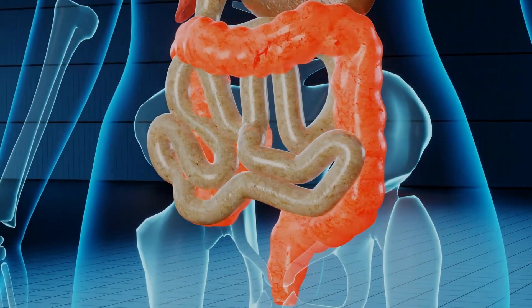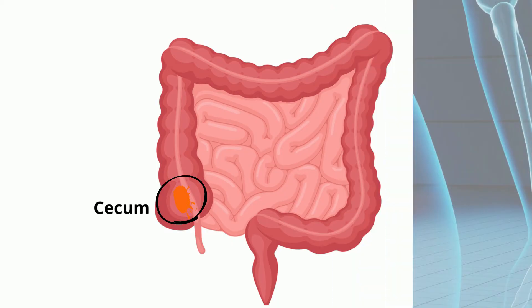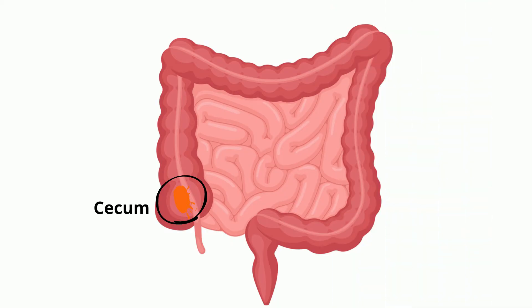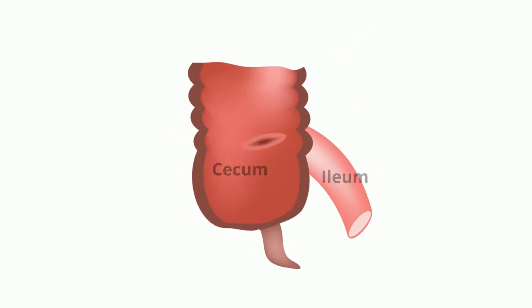The beginning section is called the cecum. Digested food from the small intestine travels to the cecum, which is a little like a pouch, and it receives this digested food from a section of the small intestine called the ileum.